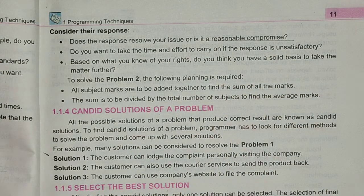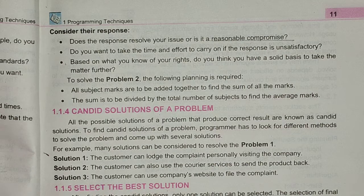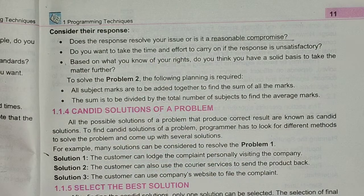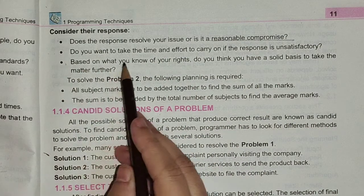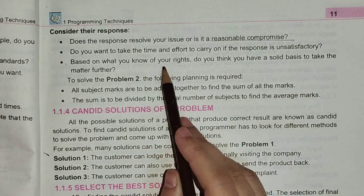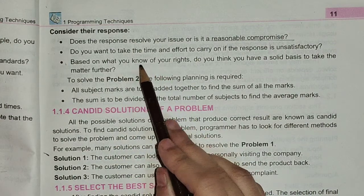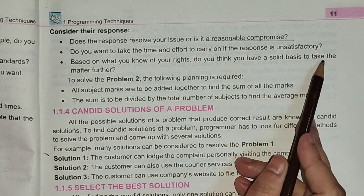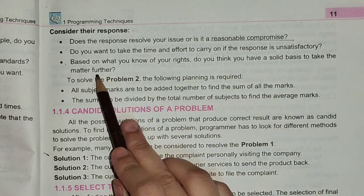For example, if you are not given a scientific calculator, then you may buy any other product instead — we call this a reasonable compromise. Do you want to take the time and effort to carry on? If the response is unsatisfactory, based on what you know of your rights, do you think you have a solid basis to take the matter further?